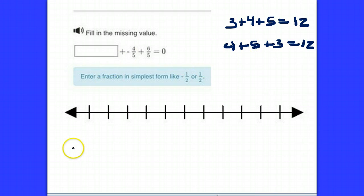I'm going to reorder this. I'm going to make negative 4 fifths plus 6 fifths plus some number I don't know is going to be equal to 0.